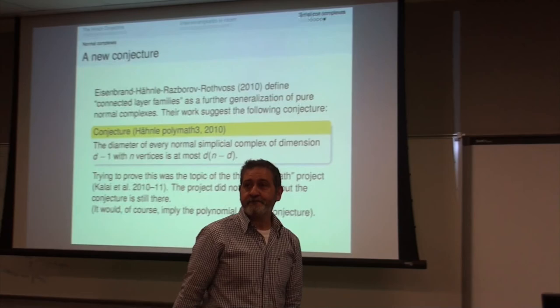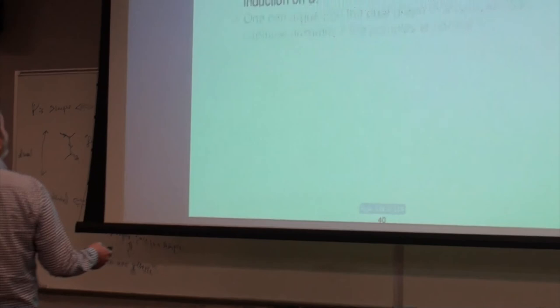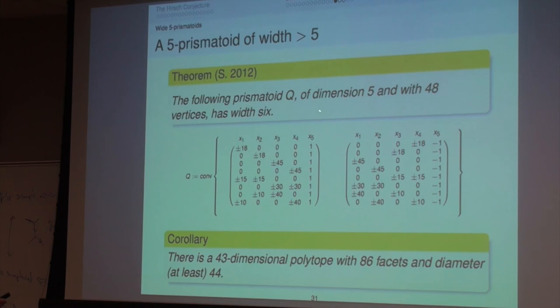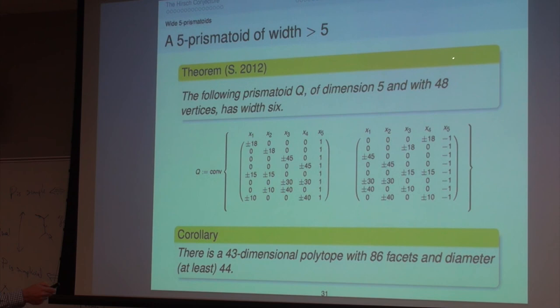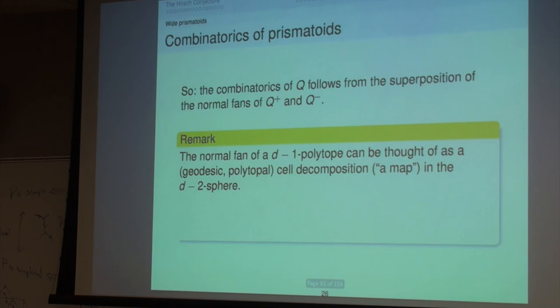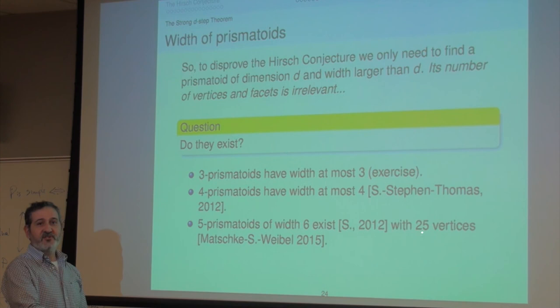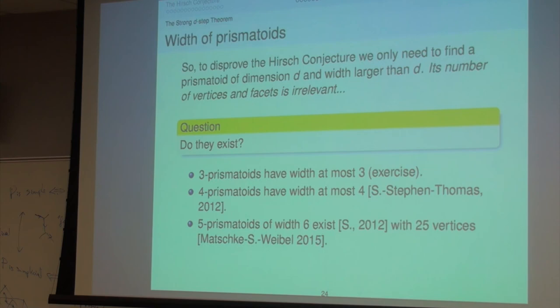Can you explain 43 and 86? The 43 comes from the initial prismatoid having 48 vertices: n equals 48, d equals 5, so n minus d equals 43. When we found the other prismatoids with 25 vertices, n minus d equals 20, giving rise to the 20-dimensional non-Hirsch polytopes using the same construction.